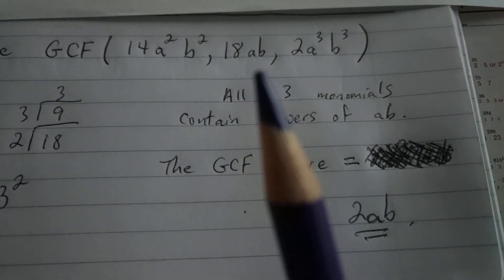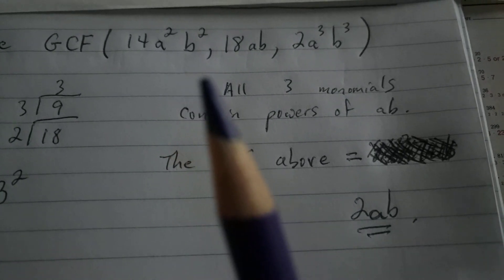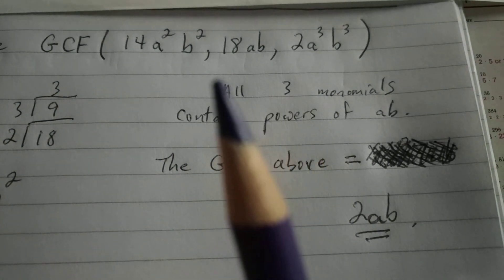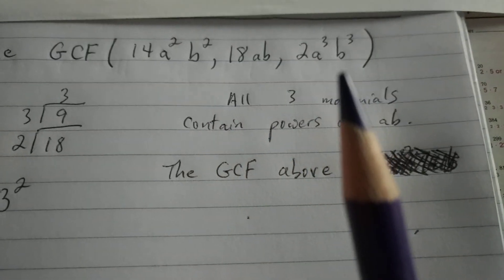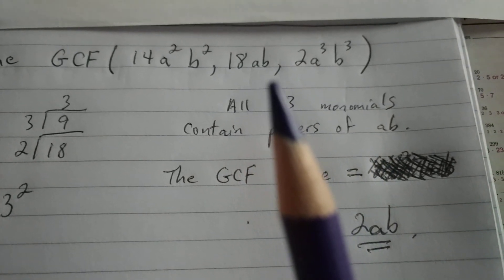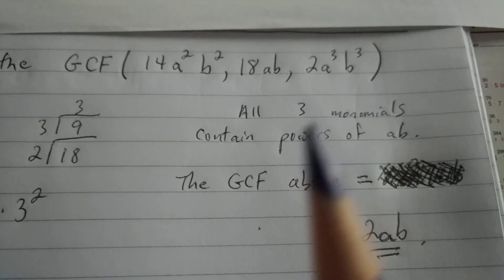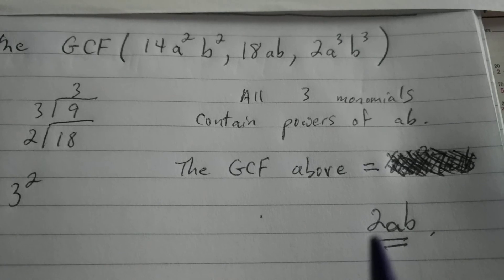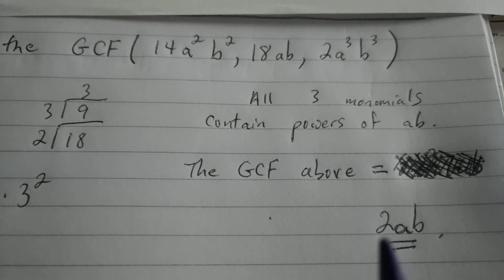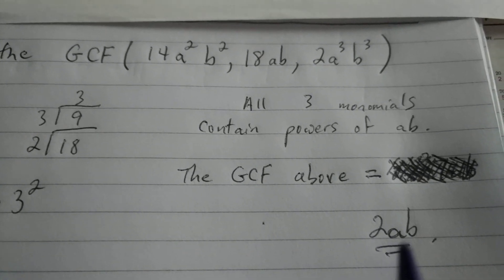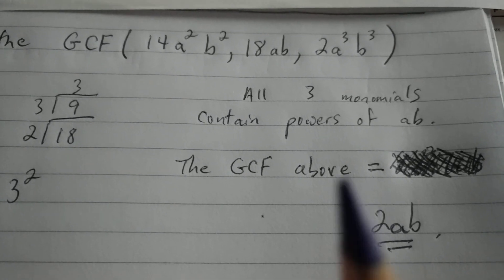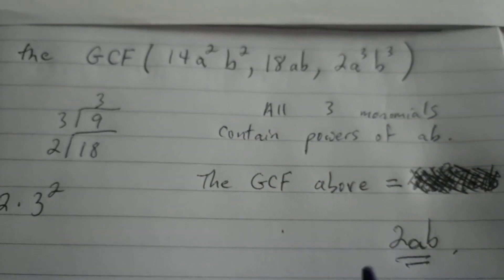However, a is a factor of itself, it's a factor of a², it's a factor of a³. B is a factor of itself, a factor of b², and a factor of b³. So ab is the greatest common factor of these three monomials. Putting it together, the greatest common factor contains the common factor of the integers, as well as the greatest common factor of the variables. The greatest common factor for this example is 2ab.